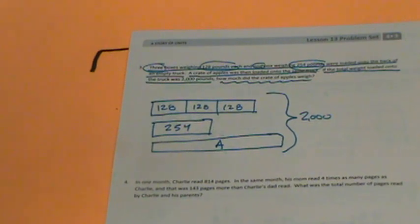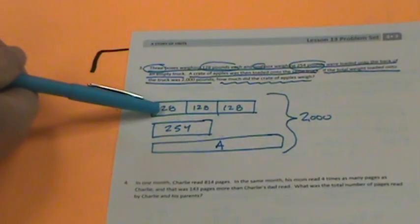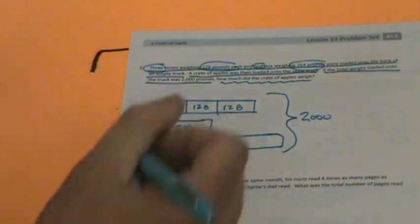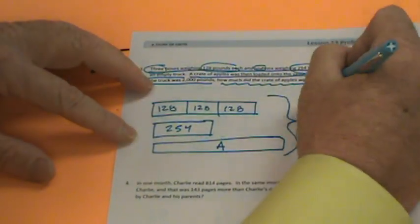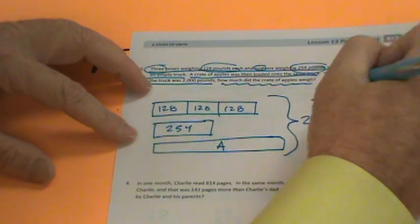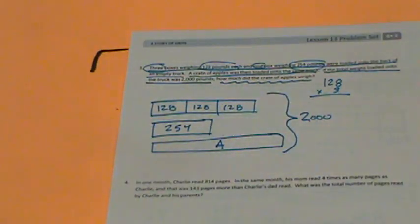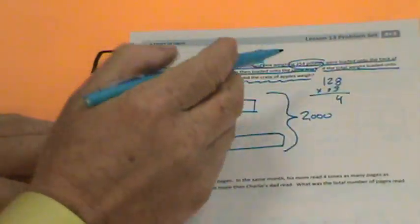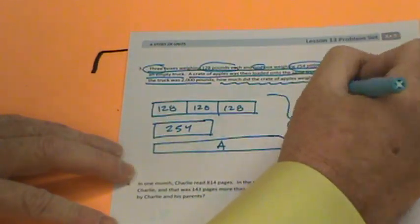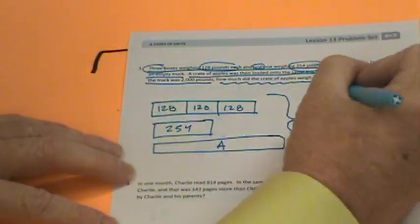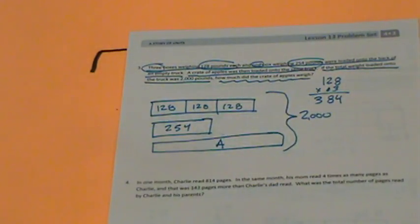So how do we figure this out exactly? First, we need to figure out the weight of the three identical boxes. Let's do 128 times 3. Eight times three: eight, 16, 24 — bring up the 2. Two times three is six, plus those two makes eight. And one times three is three. So these three boxes weigh 384 pounds.